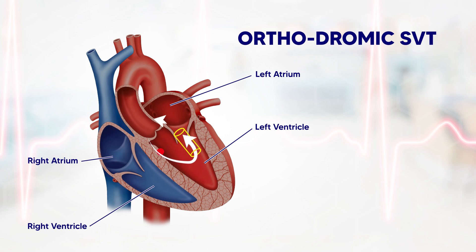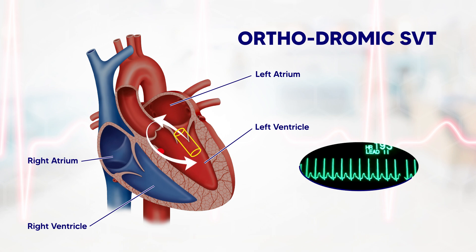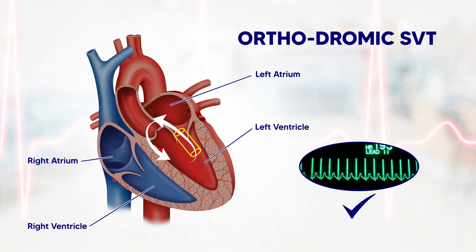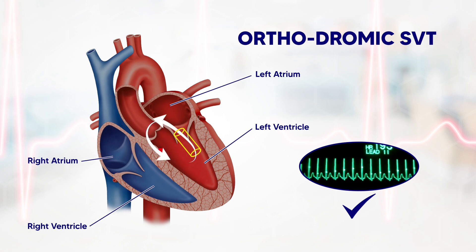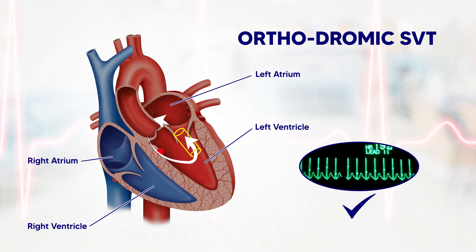If that happens, the complex will be a narrow complex. The outcome of this complete circuit is going to be a narrow complex regular tachycardia. When you see this narrow complex regular tachycardia in a patient with WPW, this is called orthodromic SVT — and you can tell that the impulse has gone through the normal conductive system in the normal direction.